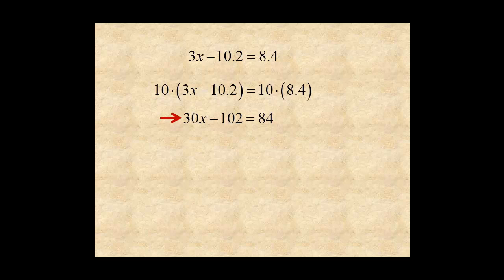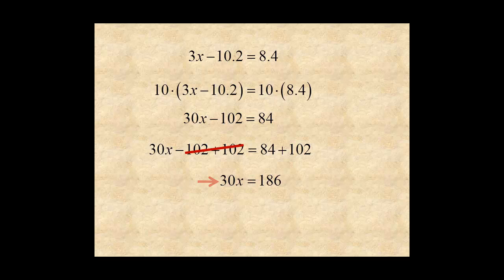Next, add 102 to both sides. For 30x equals 186. Then divide both sides by 30. For the solution x equals 6.2.